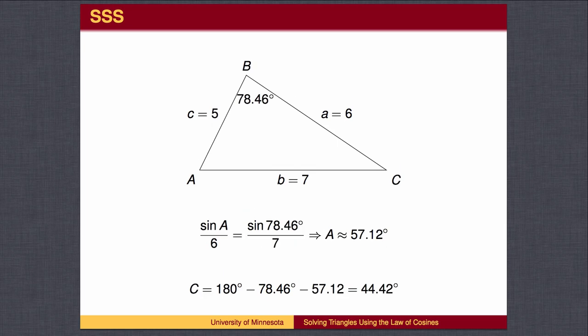We can then complete the problem using the Law of Sines. Notice that A is not the longest side of the triangle, and therefore angle A is not the largest angle, and therefore less than 90 degrees.